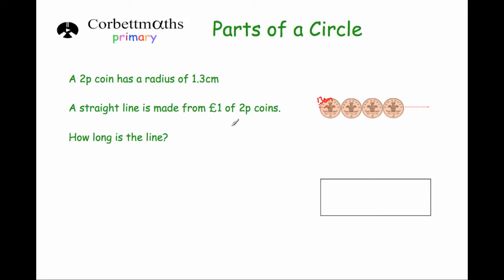So first of all, if I was doing this question, I would want to know how many coins that would be in total. So one pound is 100 pence. And we just divide that by 2, because obviously, 2 pence to see how many coins there are. 100 divided by 2 is 50. So there's 50 coins in the line.